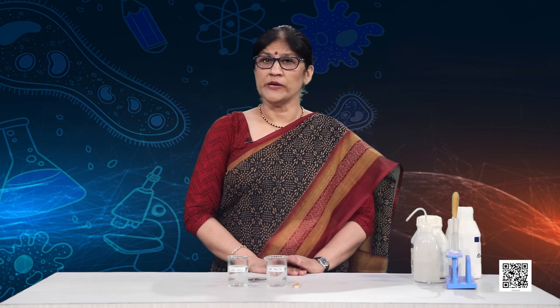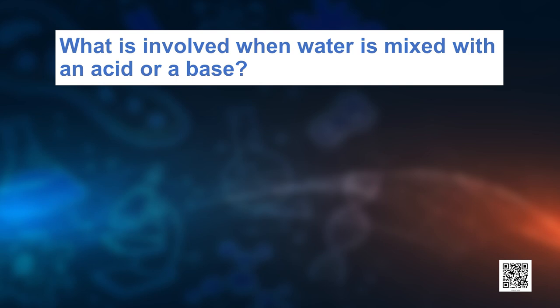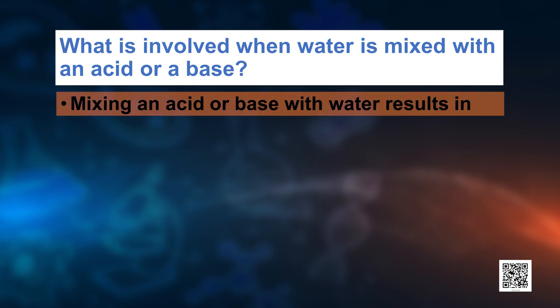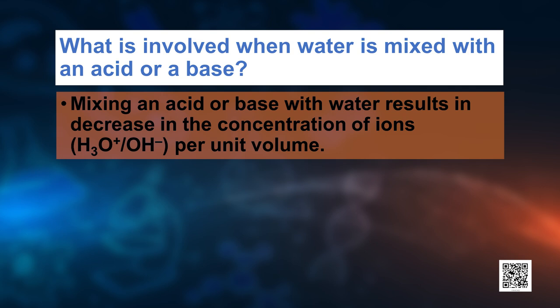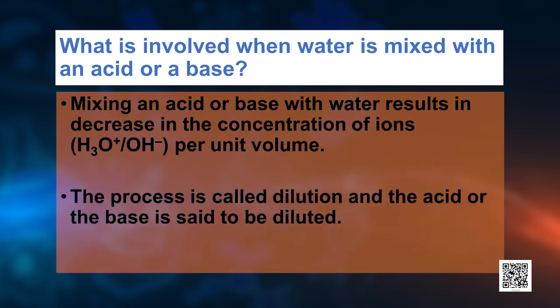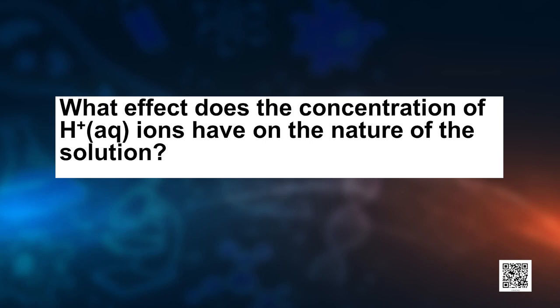So when water is mixed into acids and bases, H⁺ and OH⁻ ions are produced. If we keep on adding water to acids or bases, will it impact the concentration? Yes — mixing an acid or base with water results in a decrease in the concentration of ions, that is the hydronium ions for acids and hydroxide ions for bases per unit volume. This process of decrease in concentration by adding water is called dilution, and the acid or base is said to be diluted.